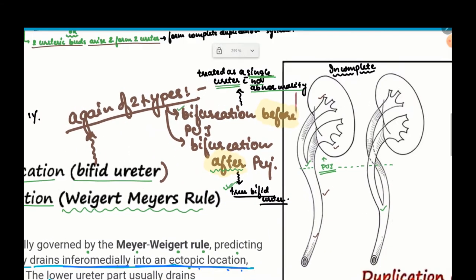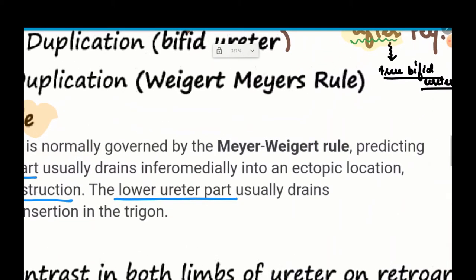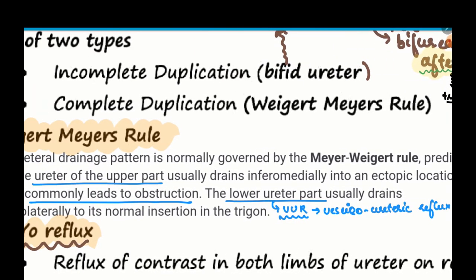What is the second part of the Weigert-Meyer rule? The ureter of the upper part commonly leads to obstruction. The ureter of the lower part usually leads to VUR — vesicoureteric reflux. These are the two parts of the Weigert-Meyer rule.